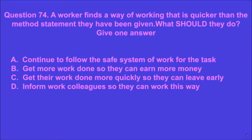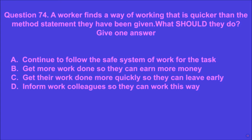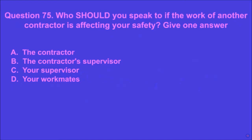Question 74: A worker finds a way of working that is quicker than the method statement they have been given. What should they do? Give one answer. A: continue to follow the safe system of work for the task, B: get more work done so they can earn more money, C: get their work done more quickly so they can leave early, D: inform work colleagues so they can work this way. A is the correct answer.